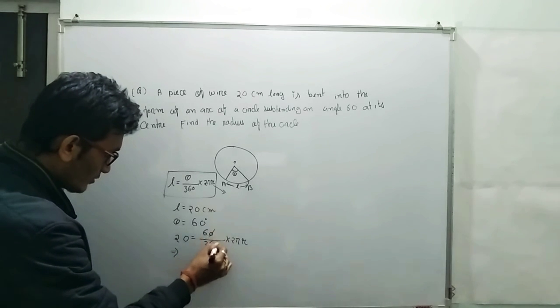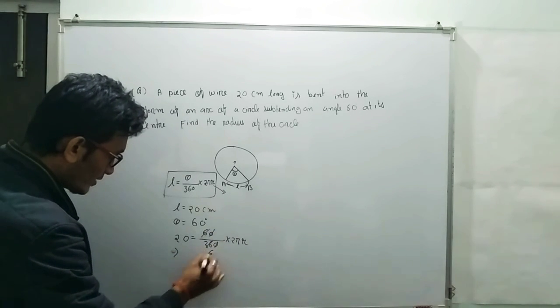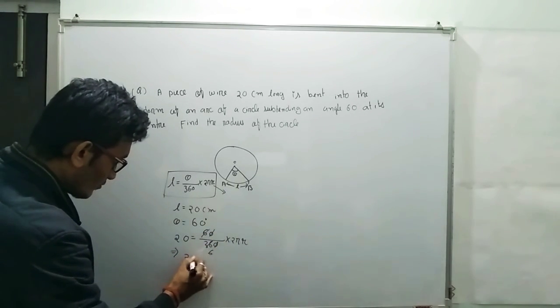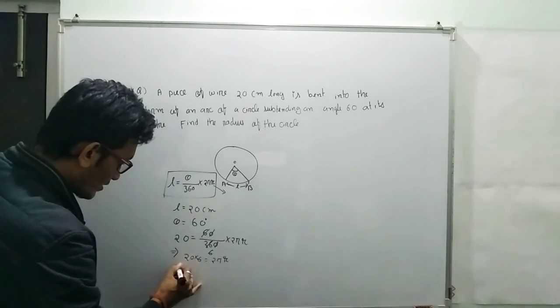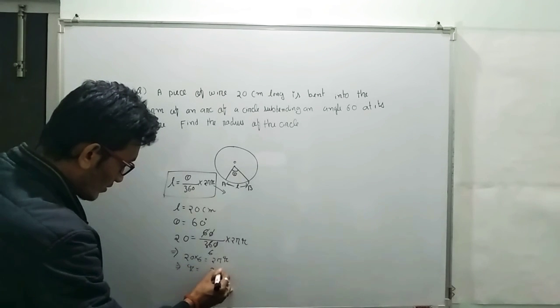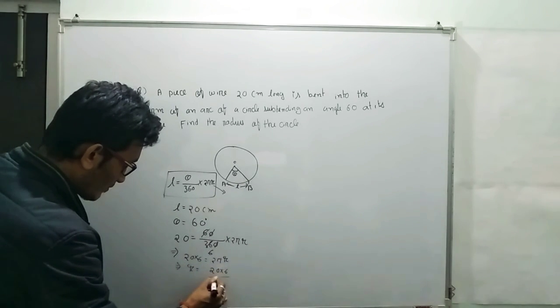Now from here 0 0 cancel, 6 into 2 into 2 pi r. From here r equals to 20 into 6 divided by